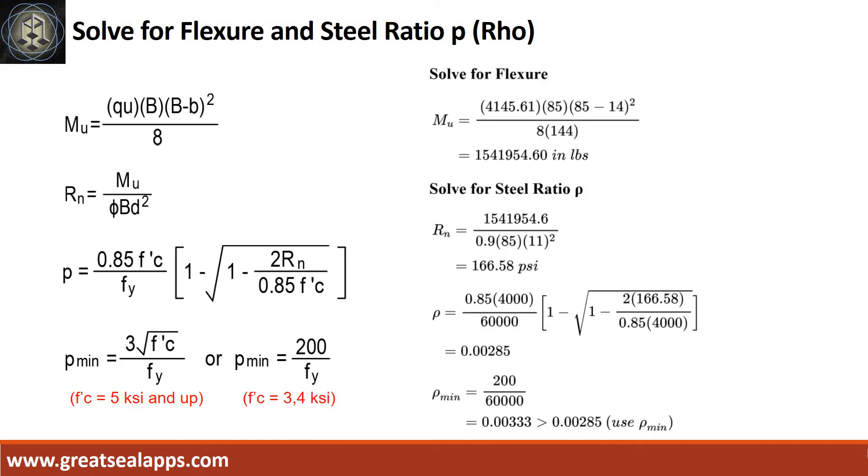Given ultimate soil pressure equals 4,145.61 PSF, footing width equals 85 inches, and column side equals 14 inches. The maximum moment is 1,541,954.6 inch pounds. Given resistance factor equals 0.9, B equals 85 inches, and D equals 11 inches.